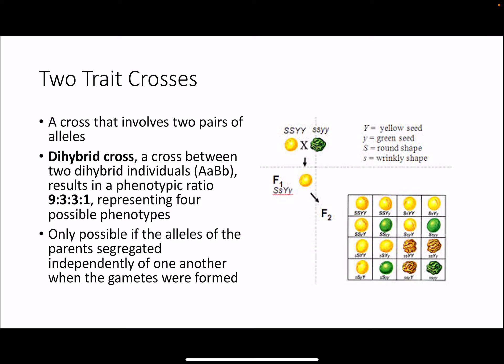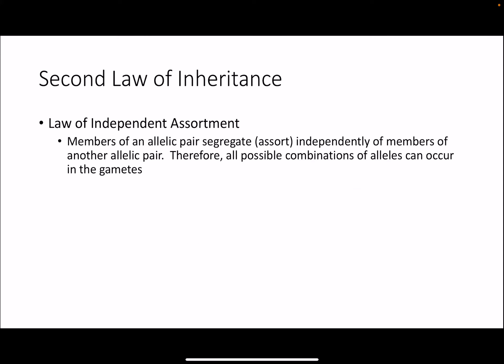This is only possible if the alleles of the parents segregated independently of one another when gametes were formed, leading us to Mendel's second law of inheritance: the law of independent assortment. This law states that members of an allelic pair segregate or sort independently of members of another allelic pair — so the color and the shape are separating independently of each other. The gene for color is not linked on the same chromosome as the gene for shape, so they can separate however they want in meiosis. This means all possible combinations of alleles can occur in the gametes.